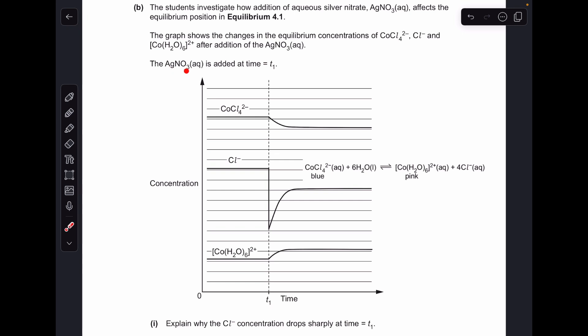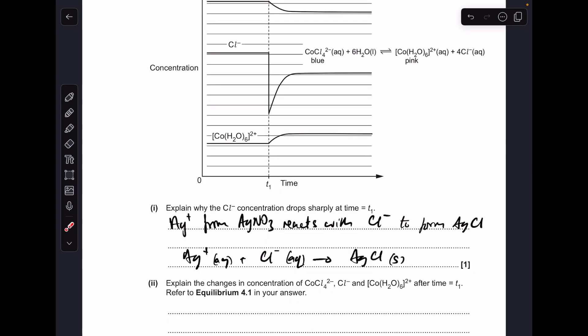So what have they done at T1? They've added silver nitrate that's got silver ions in it, and silver ions can react with chloride ions and form that solid white precipitate silver chloride, so that's why the concentration of chloride ions drops. So either of these would be fine: silver ions from silver nitrate react with chloride ions to form silver chloride, or you could even just put the equation.